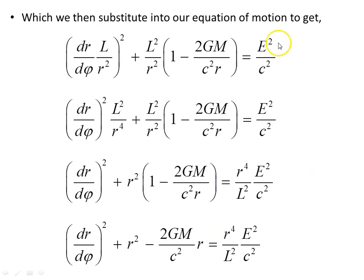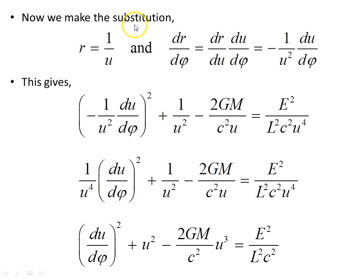Substituting dφ/dλ = L/R² into our equation of motion, we get the expression with (dR/dφ)² × L²/R⁴. Multiplying through by the reciprocal of L²/R⁴ gives us the next form. To obtain the orbit equation, we make the substitution R = 1/u, so dR/dφ = (dR/du)(du/dφ) = −(1/u²)(du/dφ). Substituting this and replacing all R's with 1/u gives our equation in terms of u.